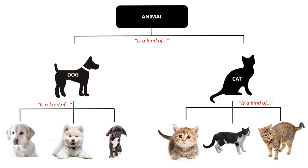We can abstract further and say that a generic abstract dog and a generic abstract cat are each a kind of animal. As we move further up this hierarchy we are generalizing and abstracting further, and as we move down it we are specializing.